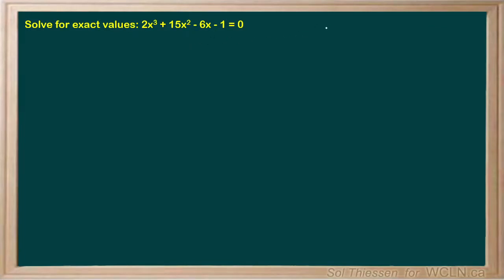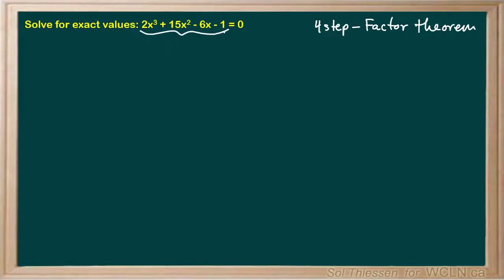To begin solving by factoring, we'll have to use our four-step process to apply the factor theorem. The first step of our process is to find a root of our polynomial, determine the corresponding factor, and divide our polynomial by that factor. I'm going to call this polynomial P of x, and we're looking for the values of x that would set P of x to 0.